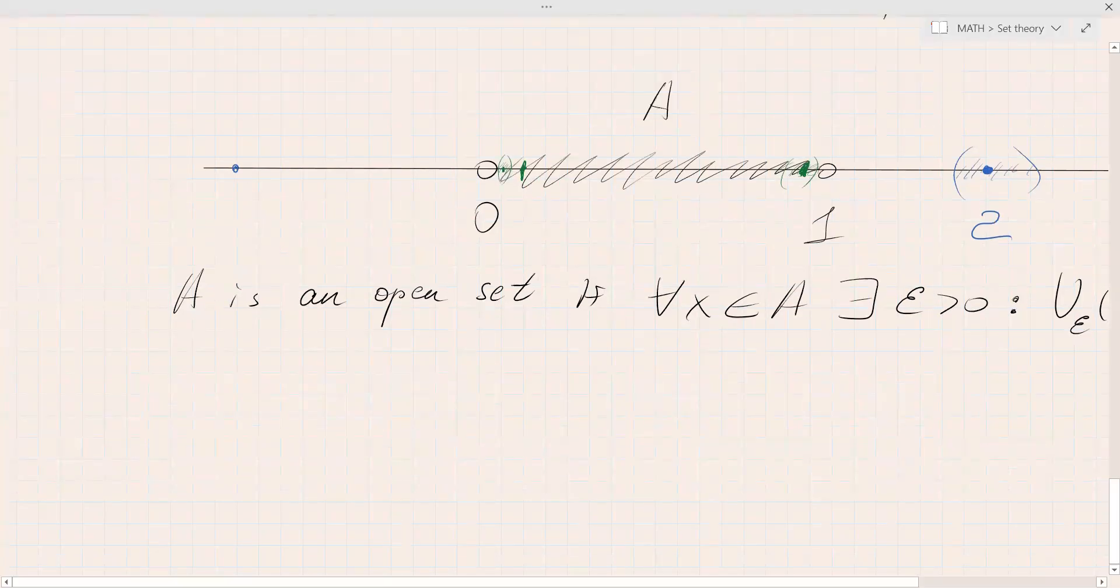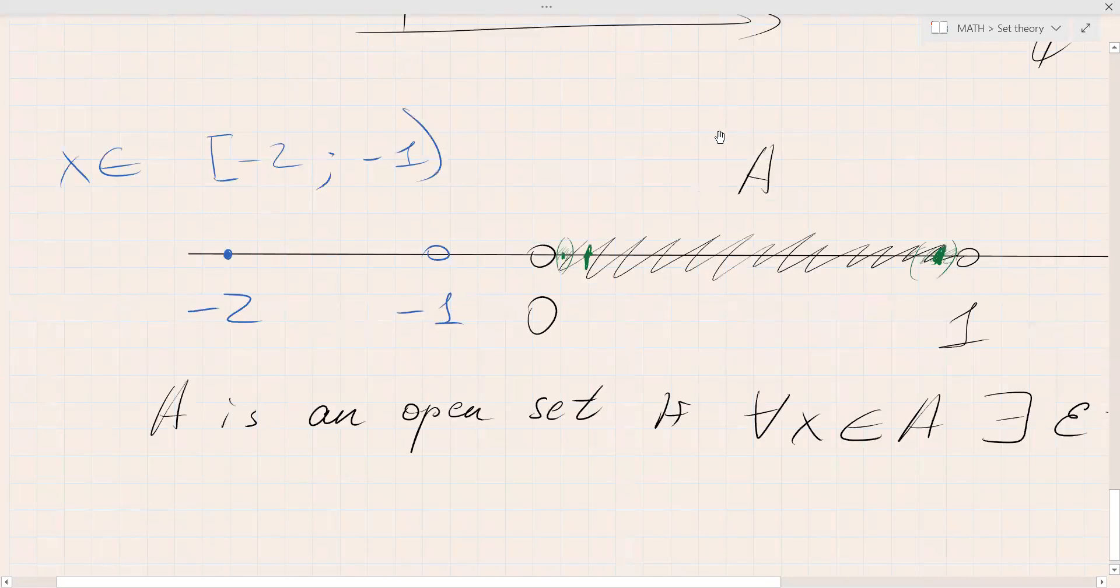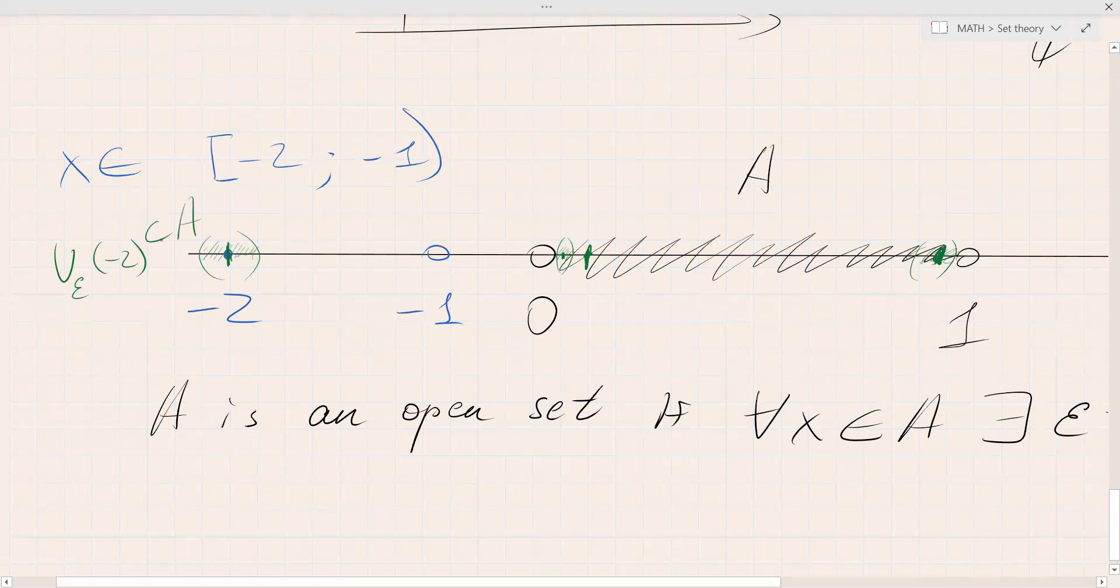Let's take a look at half interval. If for example we include minus two but we do not include minus one, we can denote it as x belongs to minus two included, minus one not included. Is this certain an open interval, or is this interval an open set? Well, of course it's not, because if we take minus two as our point and try to surround it by some epsilon neighborhood, not all this interval will be in our set. In fact, only part of it will be. We cannot say that epsilon neighborhood of point minus two is a subset of A. That is not true, it's not a subset of A. That is why this half interval is not an open set.